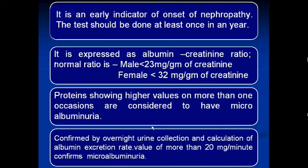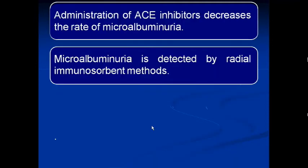That patient is considered to have microalbuminuria. It is confirmed by overnight urine collection and calculation of albumin excretion rate; a value of more than 20 mcg per minute confirms microalbuminuria. Administration of ACE inhibitors decreases the rate of microalbuminuria. Microalbuminuria is detected by radial immunodiffusion assay.